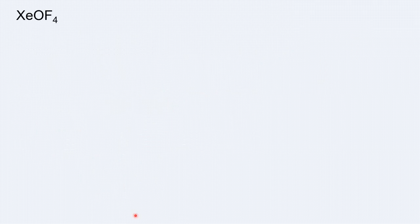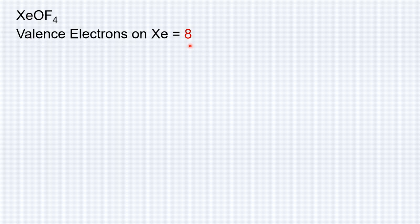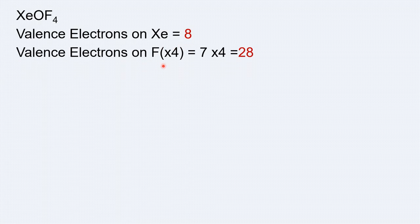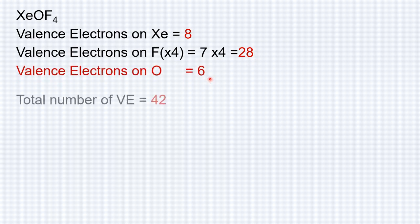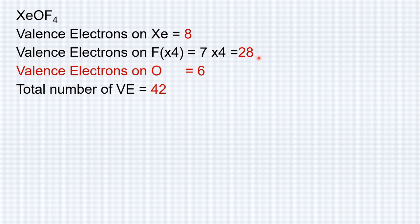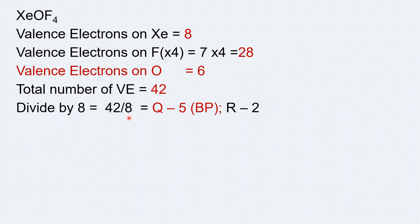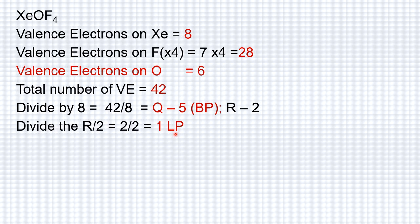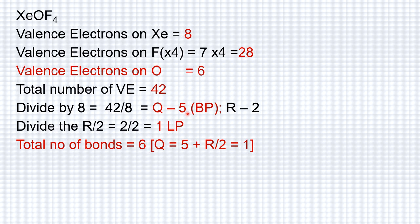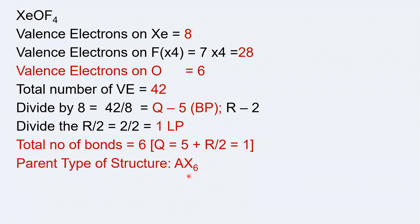Next, we will look at XeOF4. Here there is an oxygen atom in addition to fluorines, but the rule remains the same. Xenon has 8 electrons, there are 4 fluorine atoms contributing 7 times 4 equals 28, and oxygen contributes 6. The total is 8 plus 6 plus 28 equals 42. Dividing by 8 gives a quotient of 5 and a remainder of 2. Dividing the remainder by 2 gives 1 lone pair. Total bonds: 5 plus 1 equals 6, meaning 5 bond pairs and 1 lone pair.